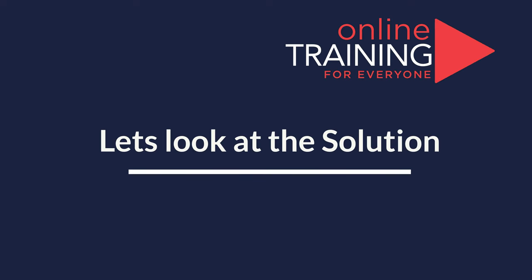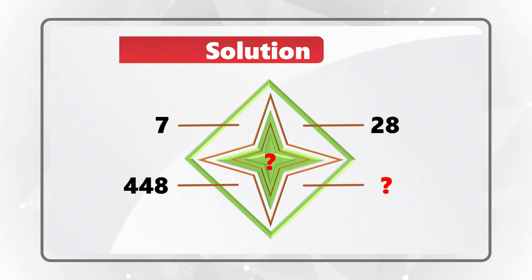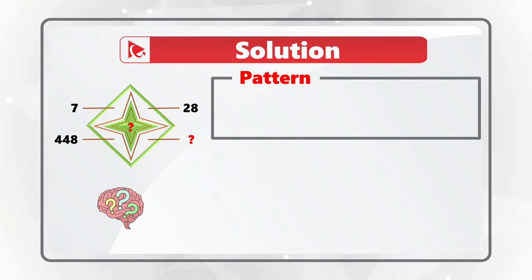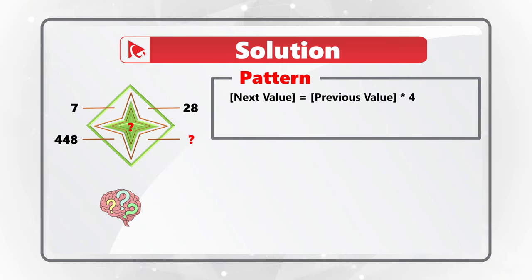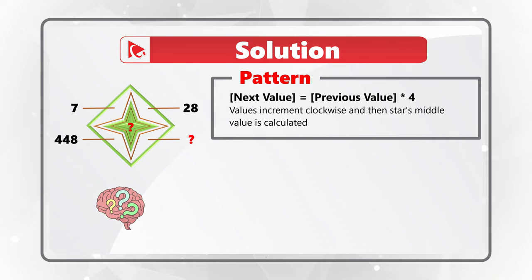If you have a better way to solve it, please make sure to post in comments. If the problem seems very unusual for you, the process of solving it is very typical. You need to look for patterns. The pattern here is that the next value is calculated as a previous value multiplied by 4. Values increment clockwise starting at 11 o'clock, and the missing value in the middle of the star is calculated last.